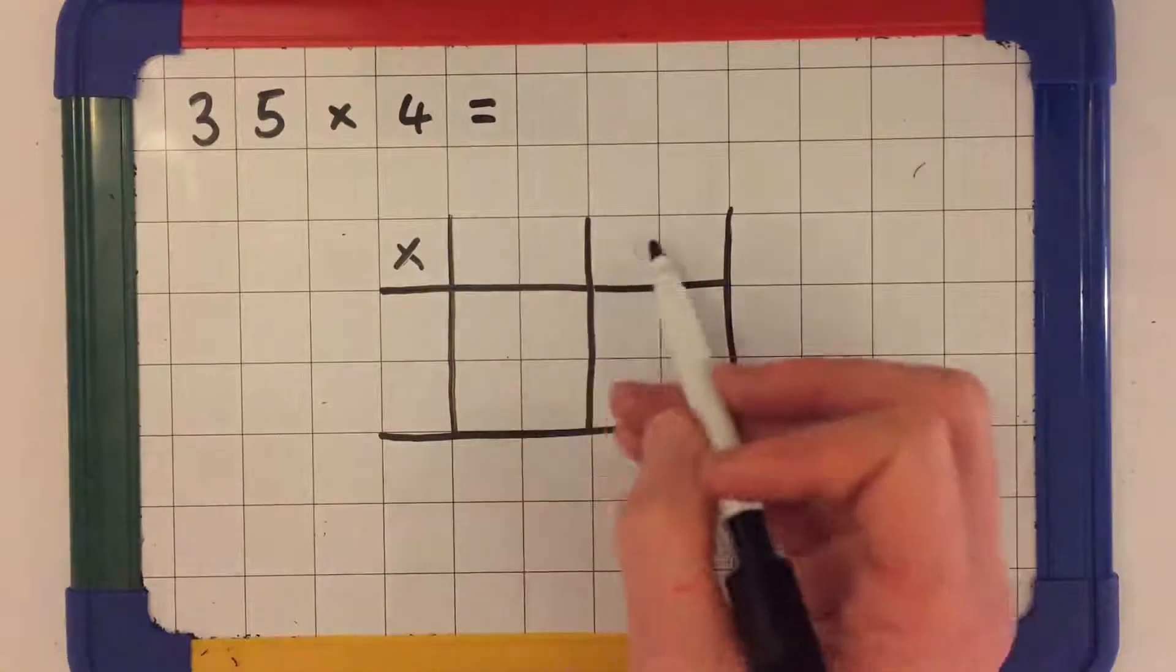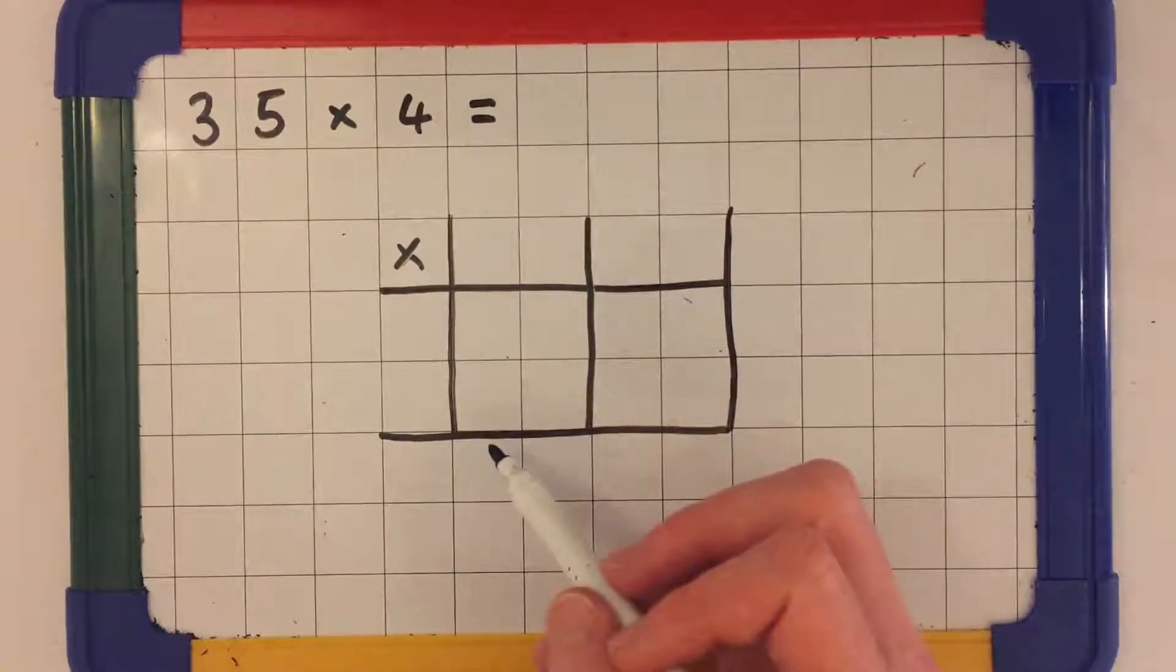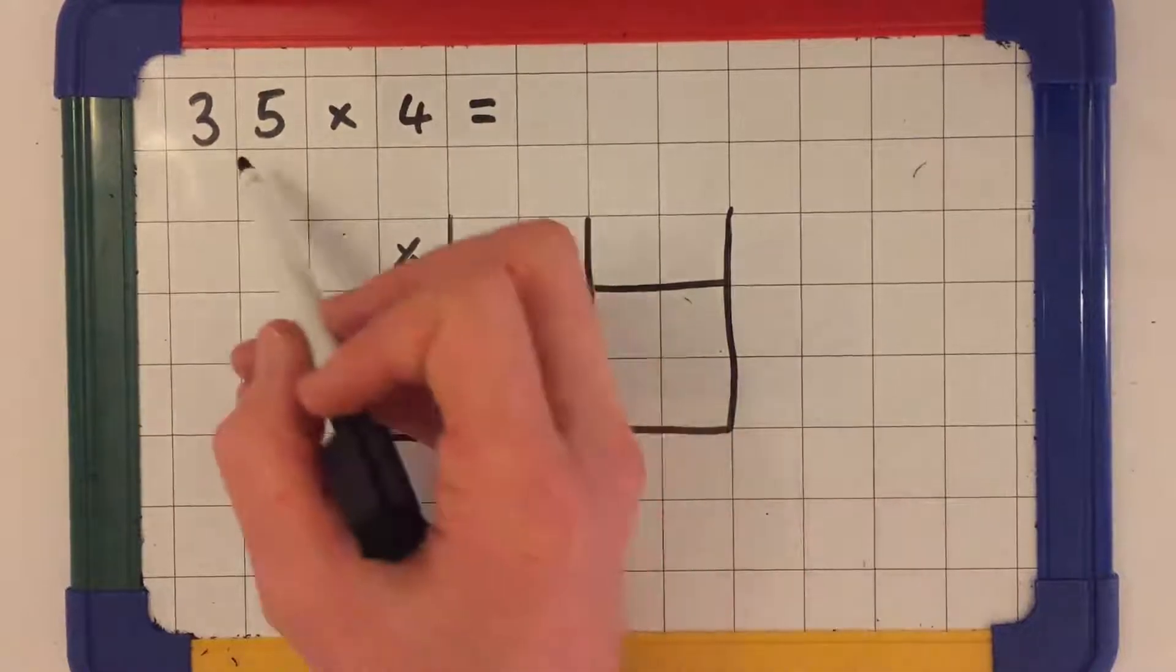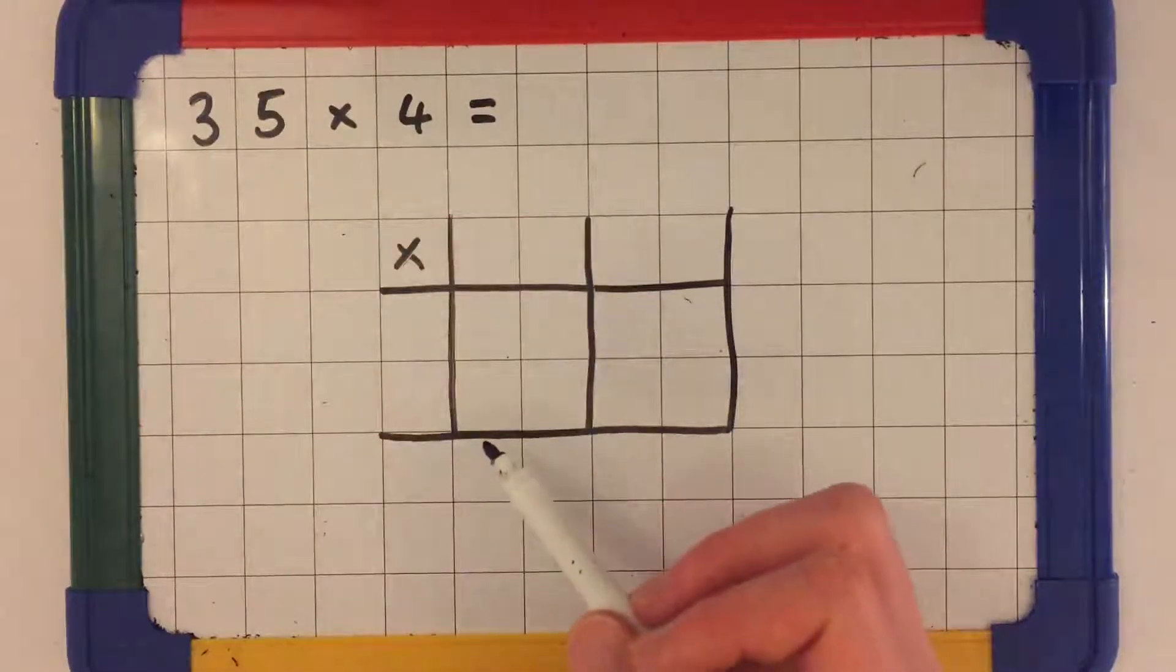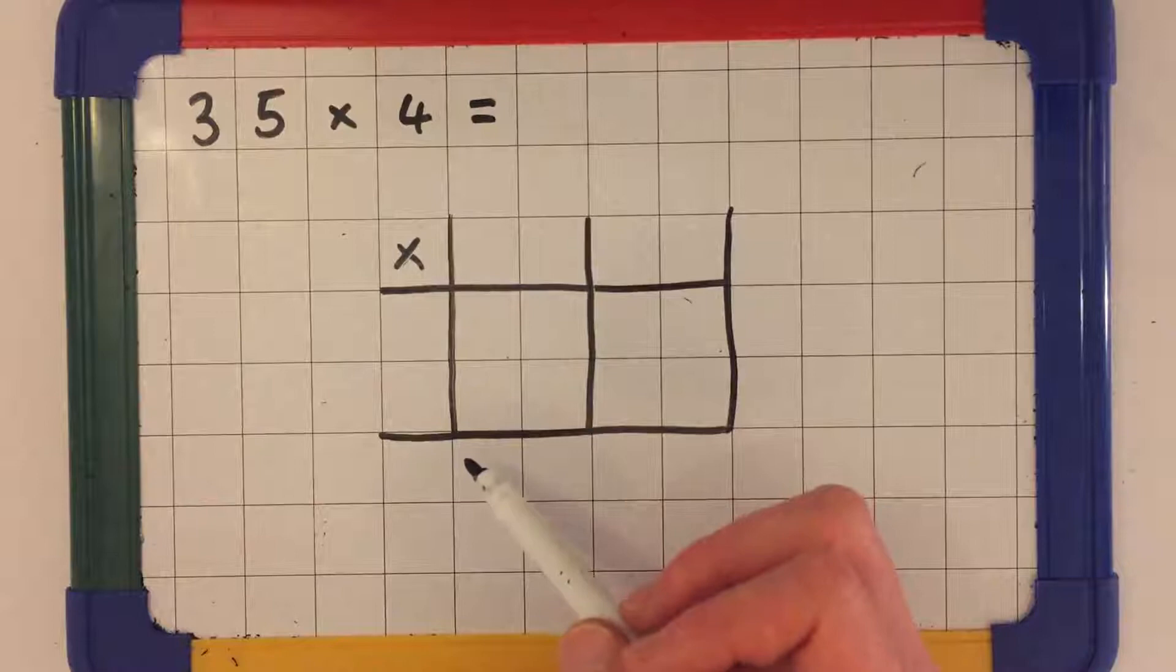Now I have two spaces here because I'm going to be partitioning my two-digit number into its tens and its ones.